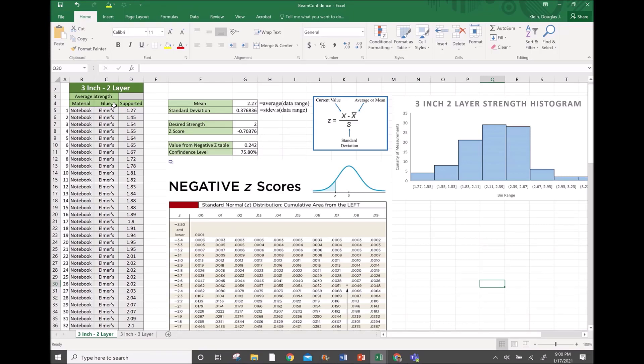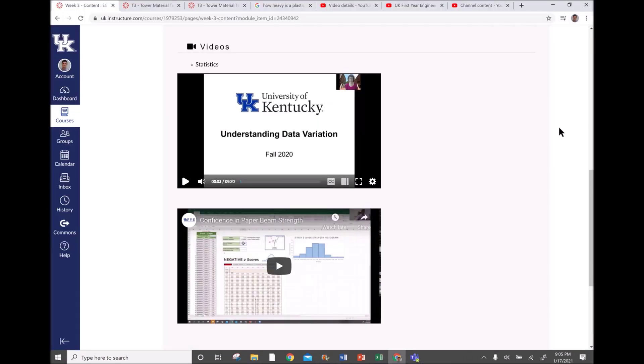Another step we can take is to determine the confidence that we have in the beams we're developing. In other words, is the beam we made just now really strong or really weak in comparison to other beams? To do that, we're going to make many samples, then find our average and standard deviation. That's going to allow us to calculate our z-score, and that z-score is going to give us a confidence level. This is another topic that's more complex, so we have other videos of reference for it.